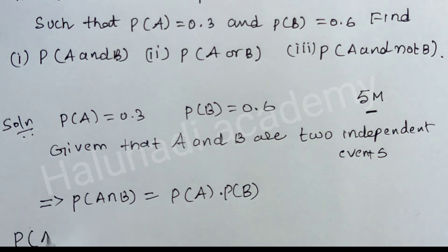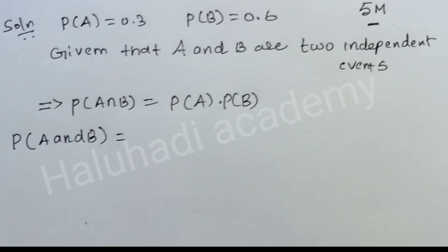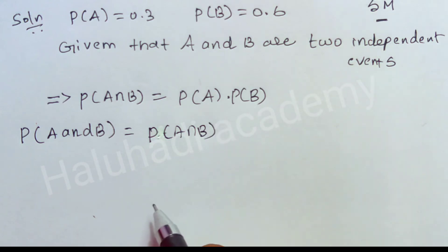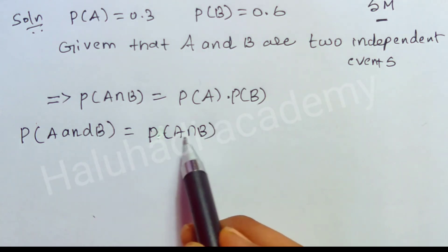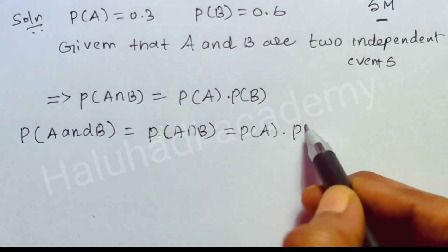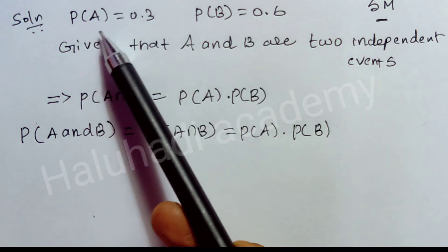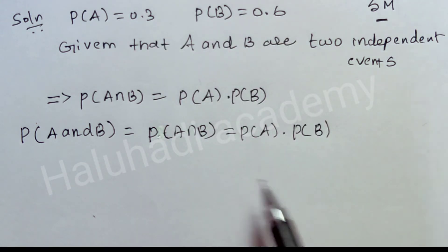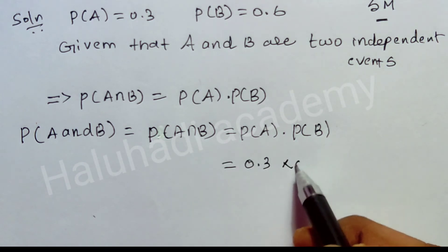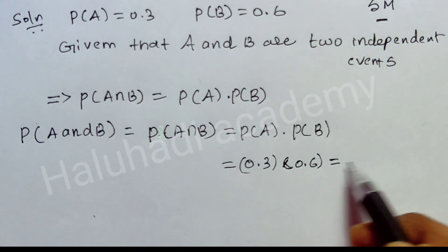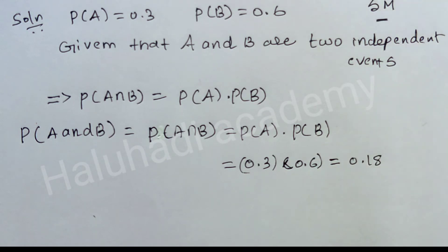P of A and B means P of A intersection B. So P of A intersection B equals P of A into P of B. P of A value is 0.3 and P of B value is 0.6. Substituting: 0.3 into 0.6. Six threes are 18, so the answer is 0.18.